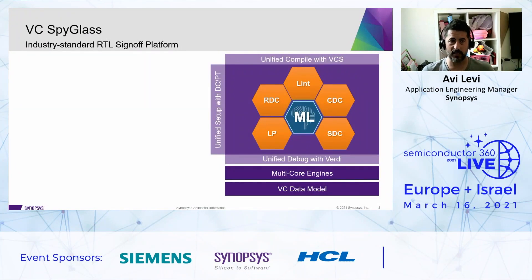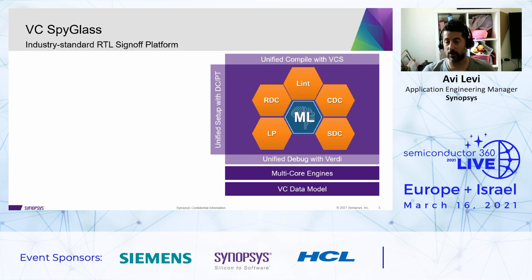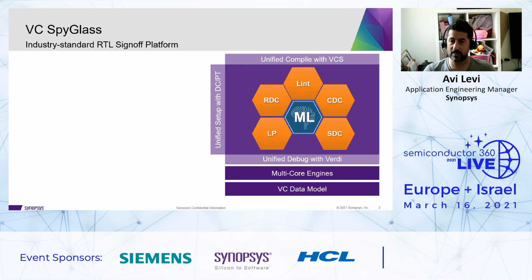What do we have in the VC Spyglass platform? As you can see on the right, we have all the apps that we used to have in Spyglass. The fact that we are migrating to a new platform doesn't mean that Spyglass is end of life or being deprecated — far from it. Spyglass is still being developed and enhanced. We have Lint, CDC, RDC, LP, and SDC products. The compilation is done under the hood with VCS — not something similar, it's VCS exactly. We have a unified setup with DC and Primetime, and the debug with the GUI is done under the Verdi platform.